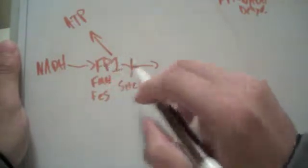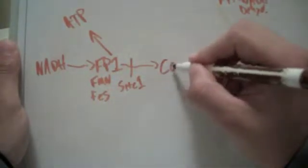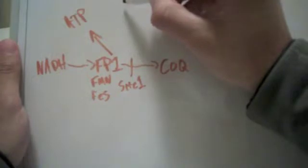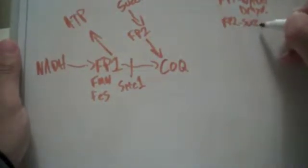The electrons go from FP1 to coenzyme Q, also known as ubiquinone. Feeding into ubiquinone, we have some other different electrons. We have succinate, comes through flavoprotein number two to CoQ. Flavoprotein number two, also known as succinate dehydrogenase.